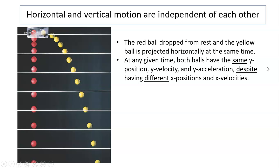Horizontal and vertical motion are independent of each other. The red ball dropped from rest, and the yellow ball projected horizontally at the same time. At any given time, both balls have the same y position, y velocity, and y acceleration, despite having different x positions and x velocity.